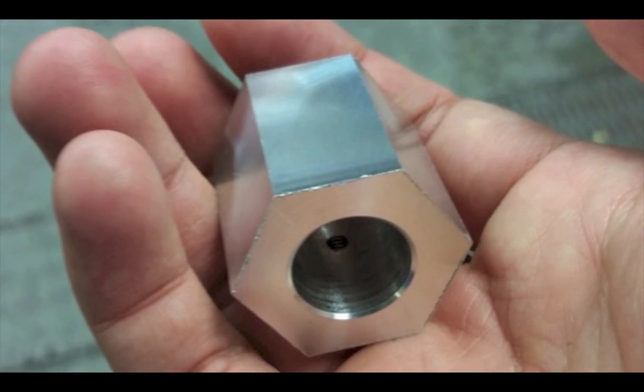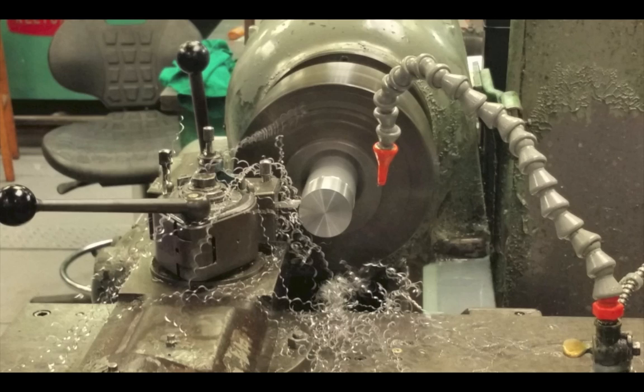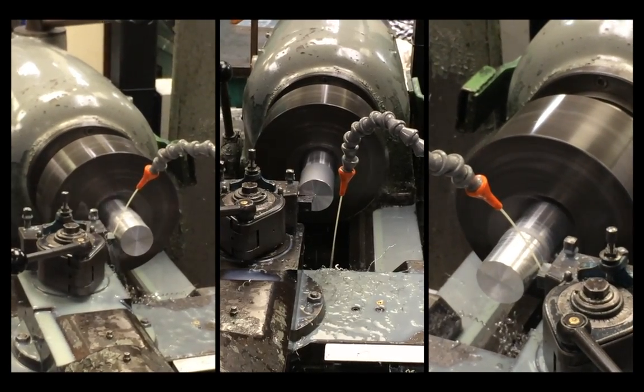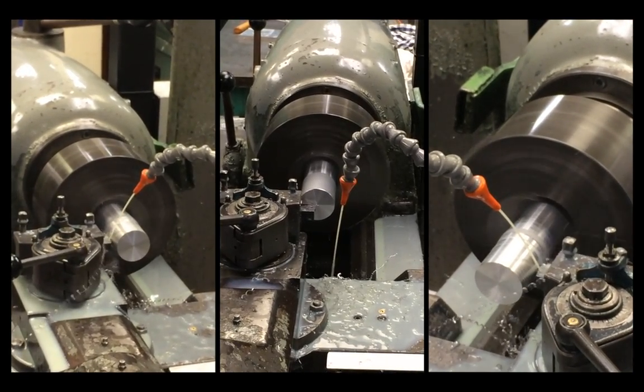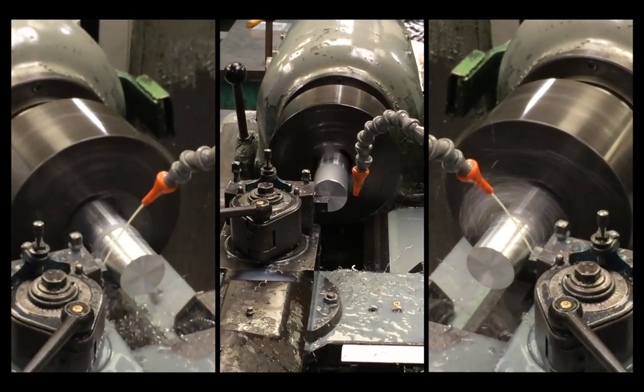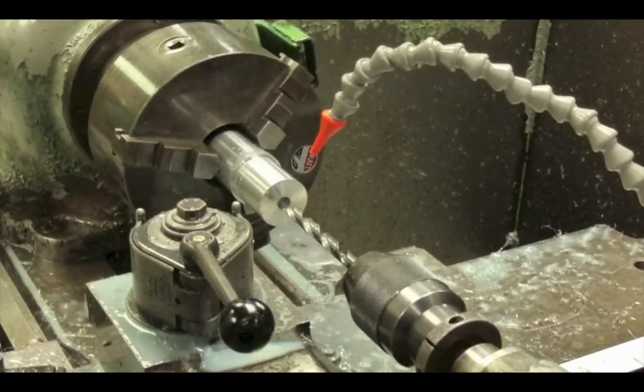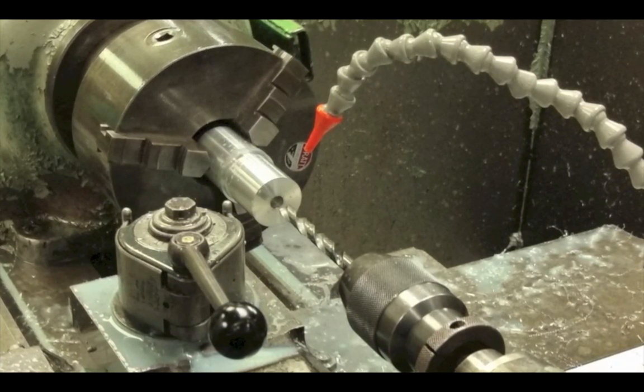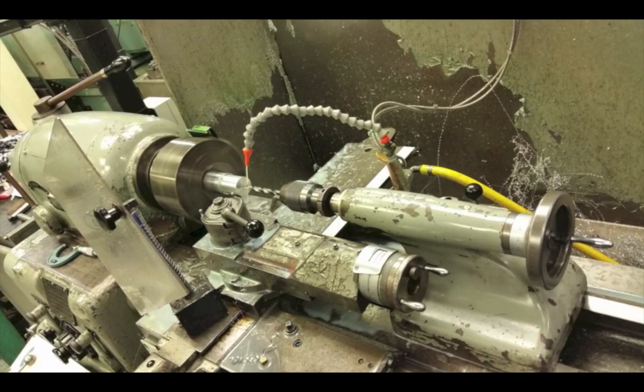For our hub, we processed an aluminium round stock bar on the lathe machine. First, we used the turning process to generate a cylindrical shape on our workpiece. A single-tipped cutting tool is used to remove material from the rotating workpiece while lubricant is applied. A hole for the shaft of the wind turbine is then drilled. To achieve good accuracy, we increase the sizes of our drills gradually.